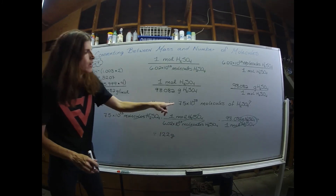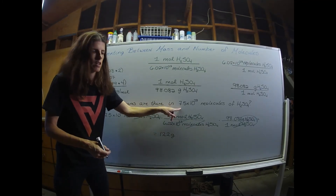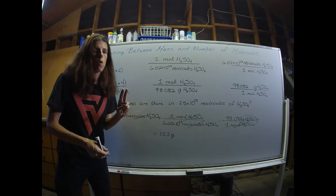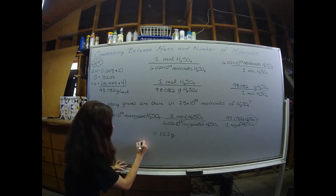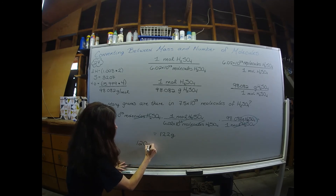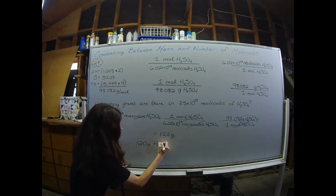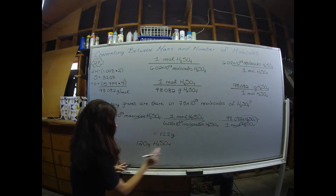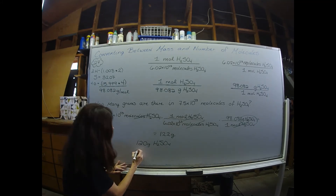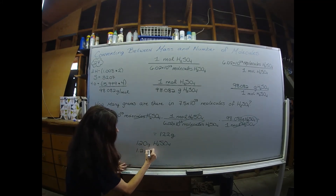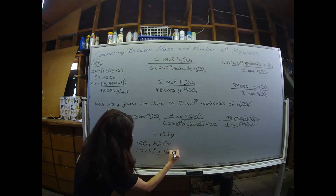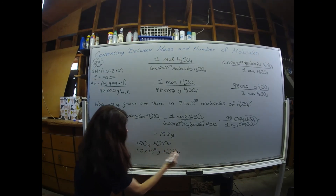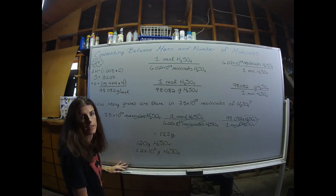The issue is that I only have two sig figs with my starting number, so there are two options for the final answer: 120 grams of sulfuric acid, or 1.2 times 10 to the second grams of sulfuric acid — either way is suitable.